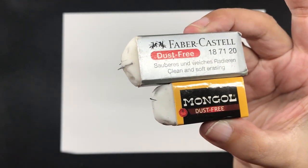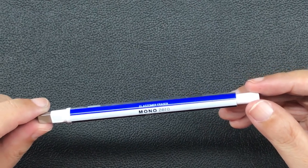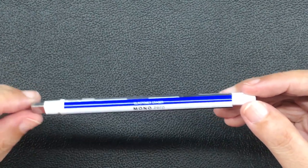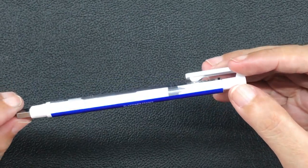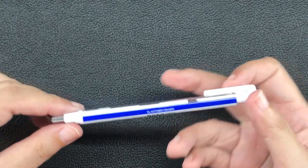I also have this Tombow mono zero eraser pen in the rectangular version, which I have unboxed and reviewed in a previous video which will also be linked in the description box.